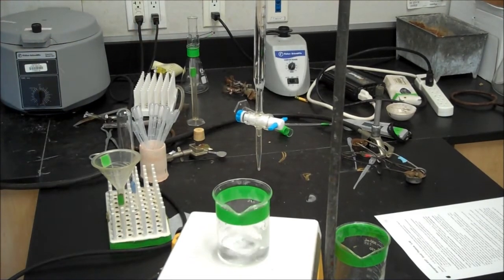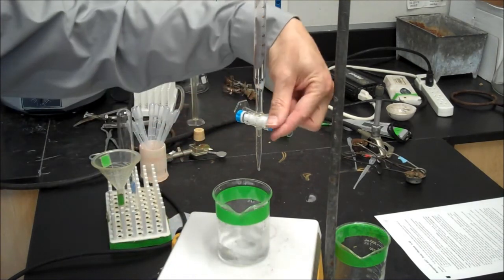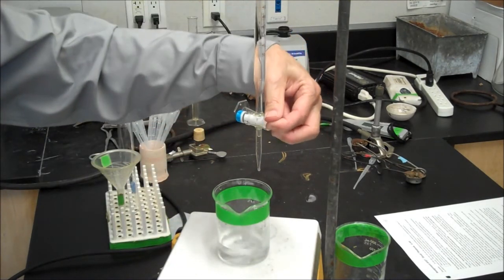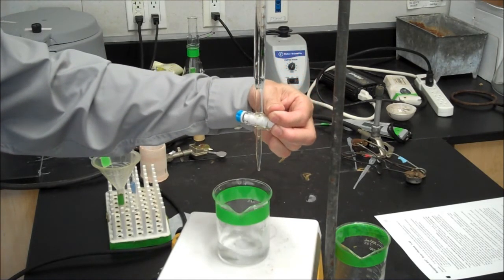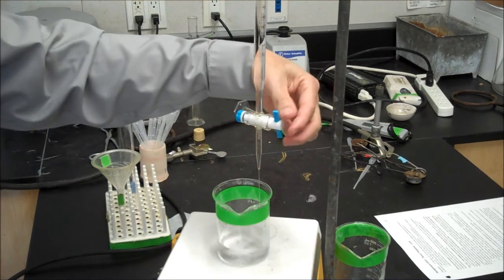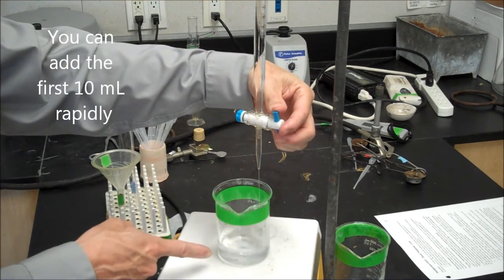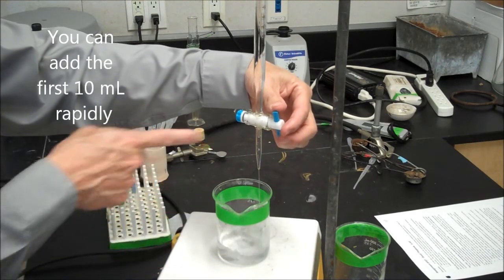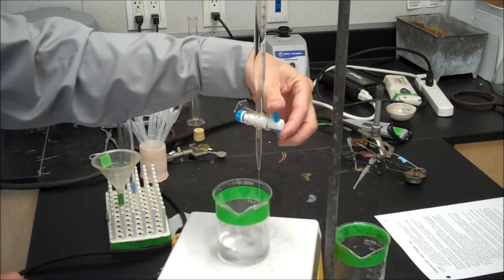The actual act of titrating works this way. My acid is here with the phenolphthalein. My base is in the burette. I can open the valve. I can add the base slowly or quickly. In the beginning of the titration, it's okay to go pretty quickly. What I'm looking for is the amount of base it takes to turn this solution pink. It's got to stay pink.